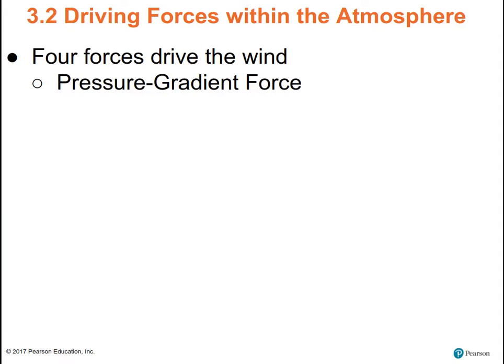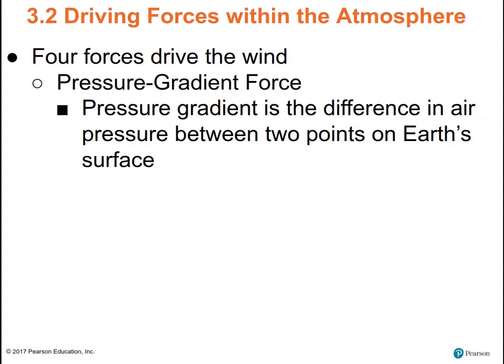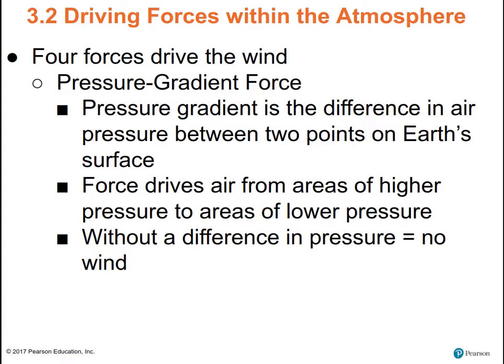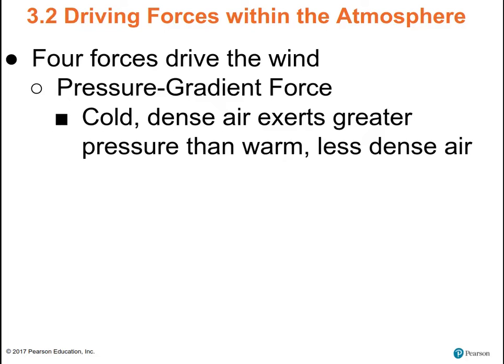The pressure gradient force drives air from high air pressure to low air pressure. The difference in air pressure between two places is what we call the pressure gradient. That tells us how strong or how much of a difference there is in air pressure between two places. If there's a big difference, we say there's a strong pressure gradient, and you'd expect to find high wind speed. Cold, dense air typically has higher air pressure than warm, less dense air.